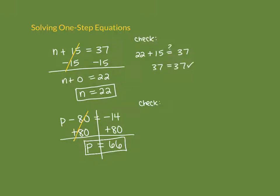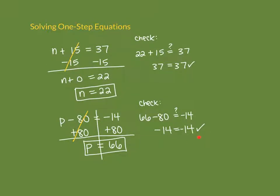Check the answer: rewrite the original equation substituting 66 for p. So 66 minus 80 — is that really equal to negative 14? Grab a calculator and type it in. 66 minus 80 does give negative 14. Do not just assume it works — the whole point of doing checks is to catch your errors. So our answer is p equals 66.